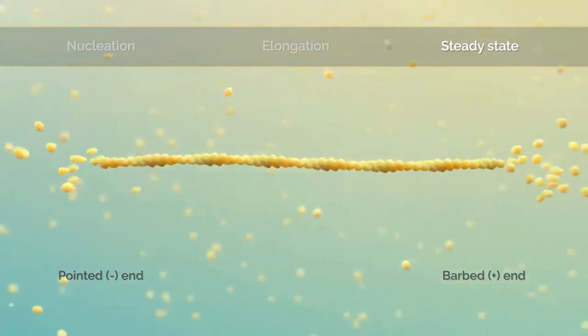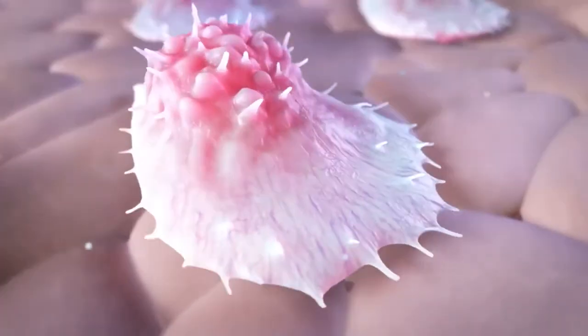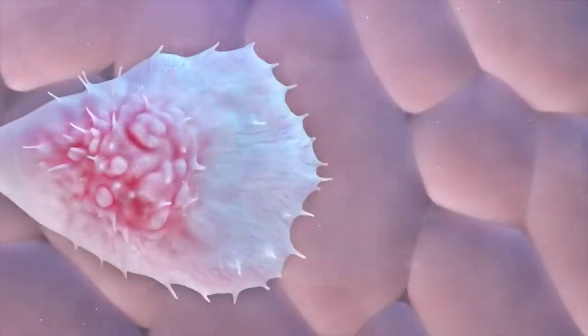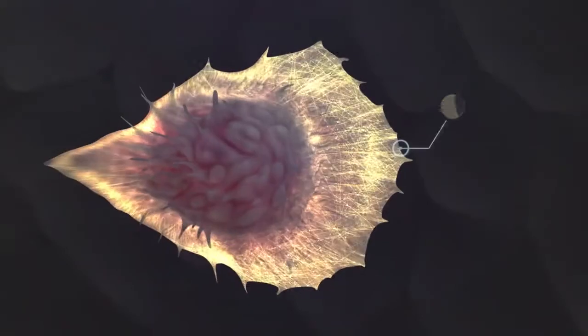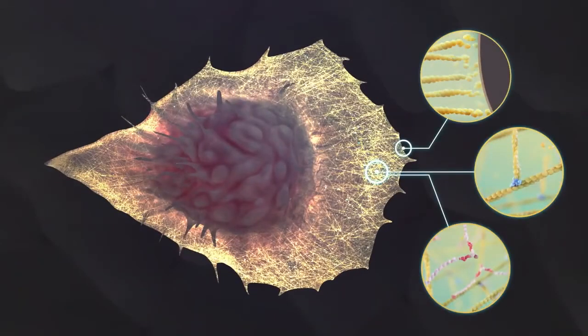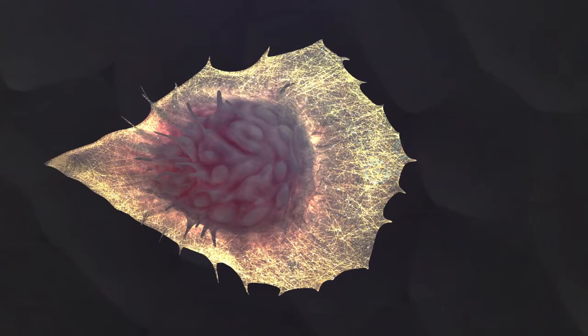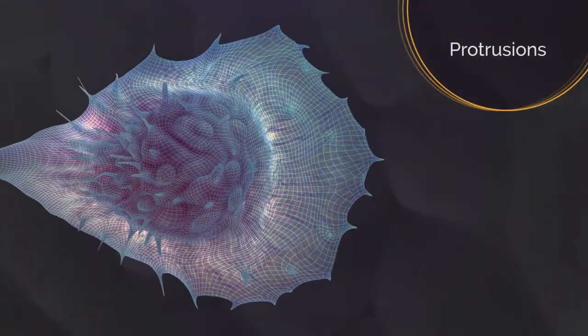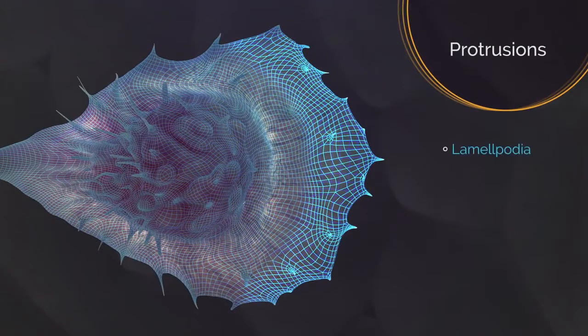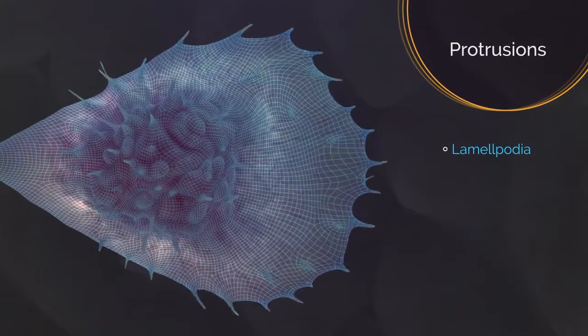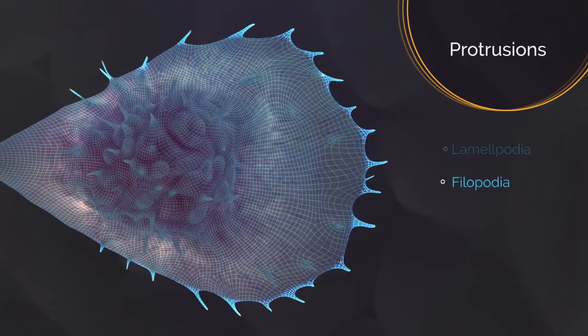At the leading edge of a moving cell, actin filaments are continuously treadmilling, branching off, and cross-linking. These activities push the plasma membrane, forming cell protrusions such as wide blunt projections called lamellipodia and narrow pointed projections called philipodia.